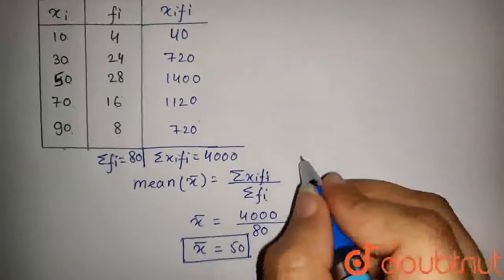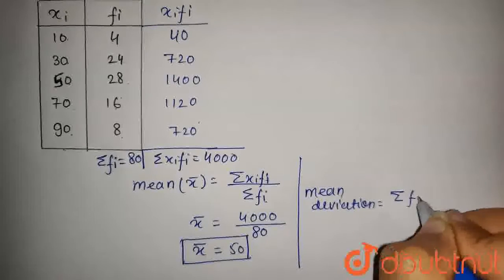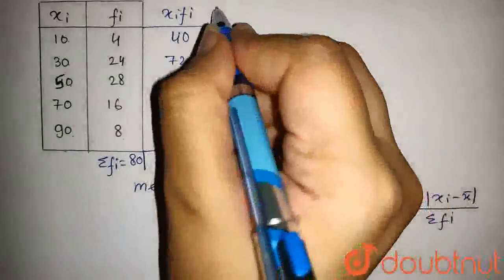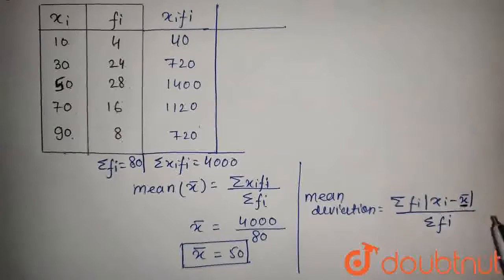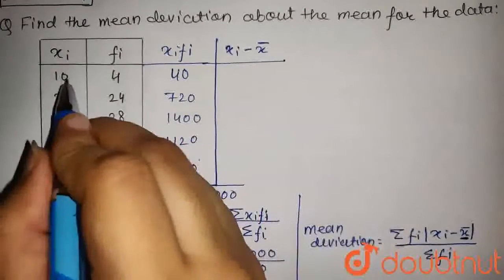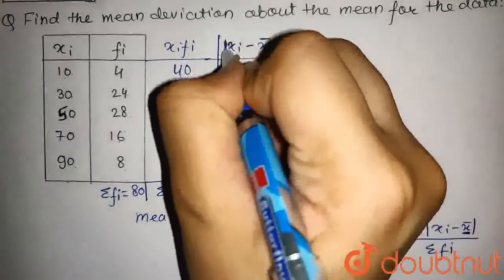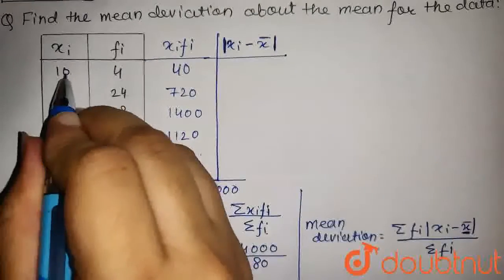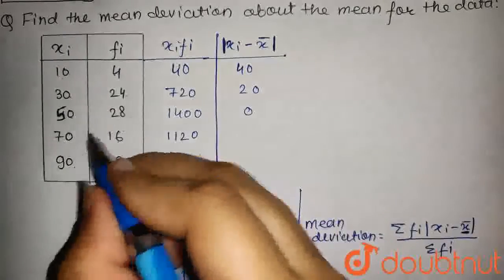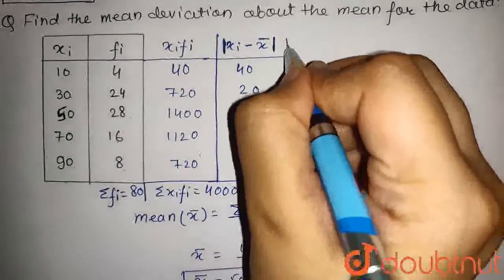Now we have to find the mean deviation. Mean deviation can be found by the formula: summation of fᵢ into modulus of (xᵢ minus x̄) upon summation of fᵢ. The mean x̄ is 50. So the values of |xᵢ - x̄| are: |10 - 50| = 40, |30 - 50| = 20, |50 - 50| = 0, |70 - 50| = 20, and |90 - 50| = 40.